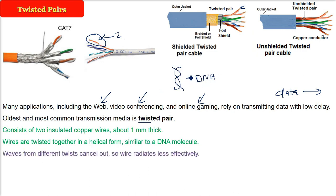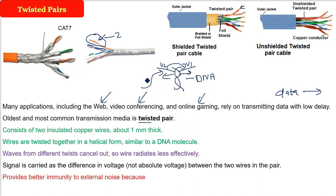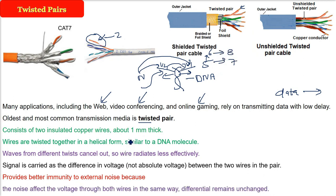The electromagnetic wave concept explains why we use the helical shape — when wires are twisted, the waves cancel out, so the wire radiates less effectively. The signal is carried as the difference in voltage between the two wires in the pair, not the absolute voltage. This is because noise affects both voltages equally. For example, if voltages are 5 and 7, and noise adds 1 to each giving 6 and 8, the difference remains the same, providing immunity to external noise.